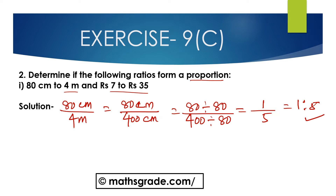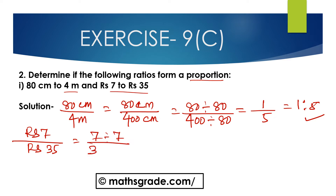Now 7 rupees to 35 rupees: both the antecedent and consequent are in rupees. Between 7 and 35, the common ratio is 7. So 7 divided by 7 is 1, and 35 divided by 7 is 5 — giving us 1 is to 5. Both ratios equal 1 is to 5, so these two ratios form a proportion.